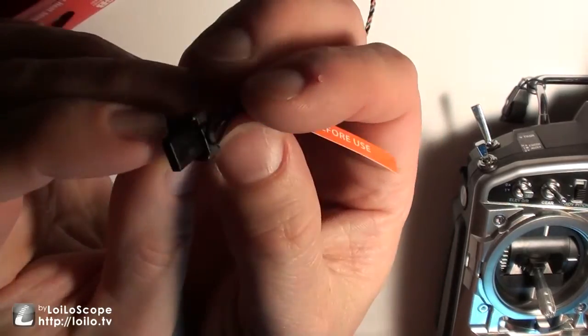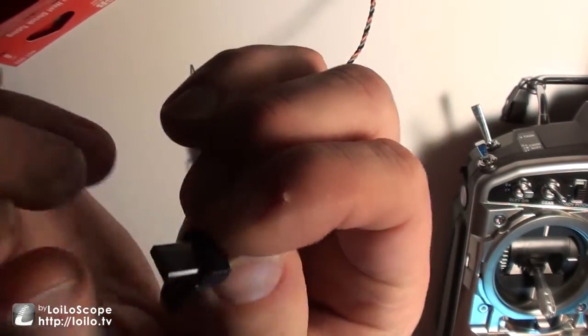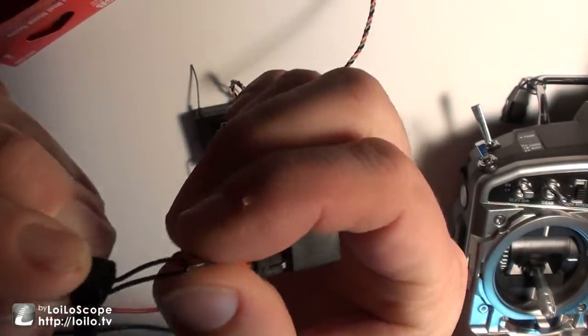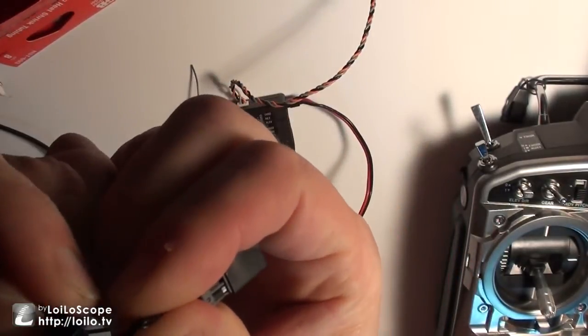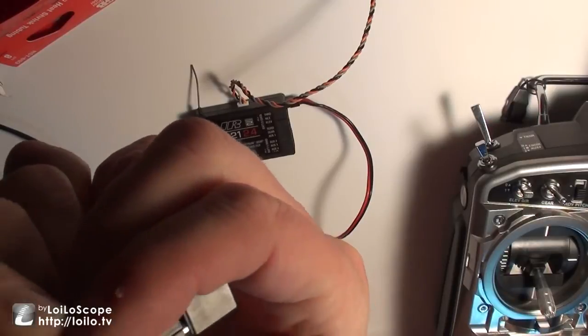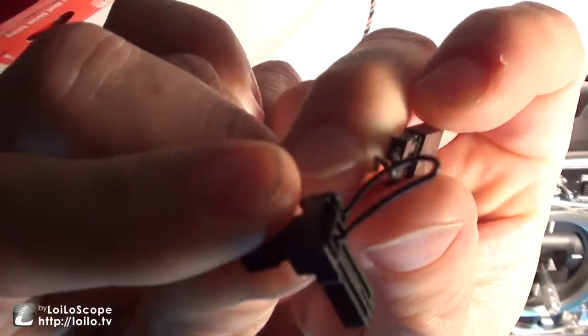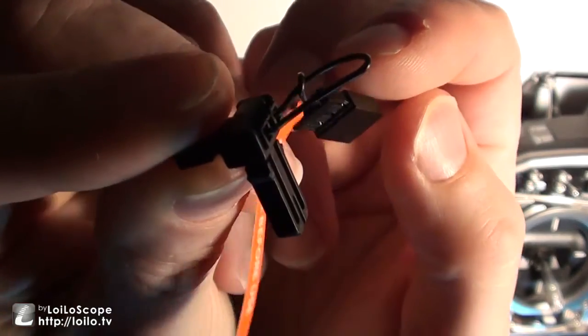But what this binder is, basically—if you're ever in a bind, I didn't mean to be funny—but all the binder is, it's a short between the two connectors. The two outside connectors are shorted, basically just through a loop of wire. That's all it is.